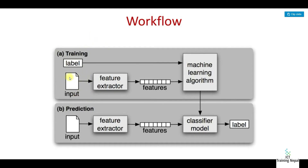The input is the input and the label is the label. The machine learning system takes input with labels. The training environment and the prediction environment are separate. The classifier model is trained, and you can check the prediction against the classifier model. If it looks like an apple, it is classified as apple.